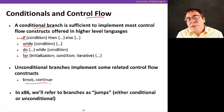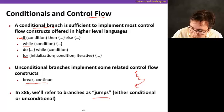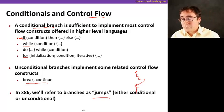In x86, we refer to branches as jumps because you're executing and it jumps to a different part of your program, either conditional or unconditional.